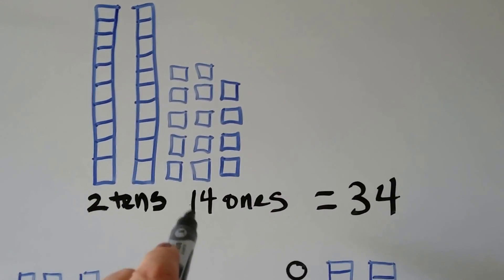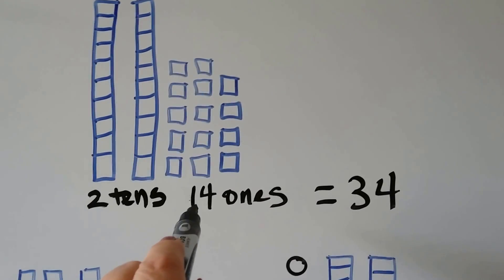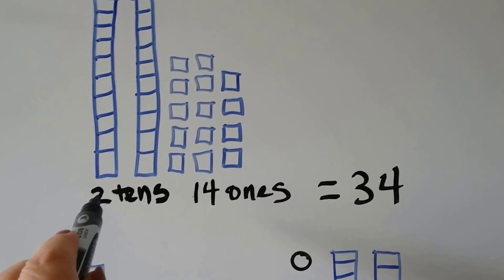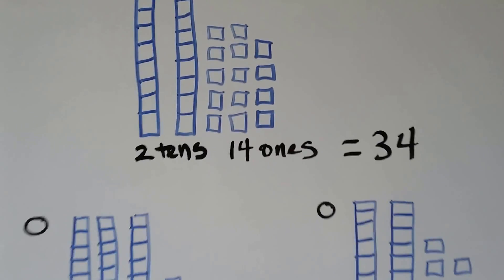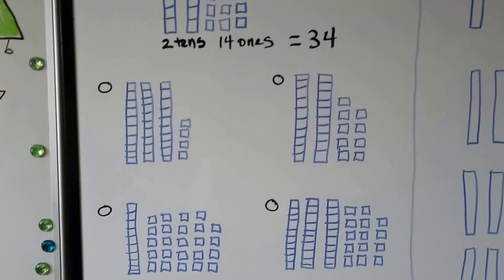Two tens and 14 ones is the same as 34. We can take this one 10 from the 14 and give it to the tens place. So there will be three tens and four ones.